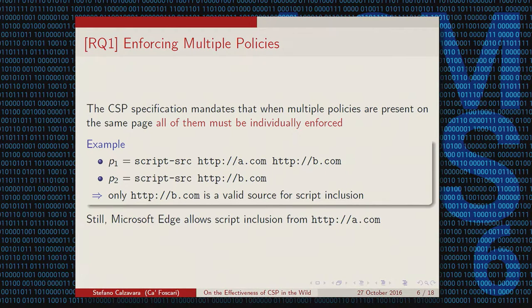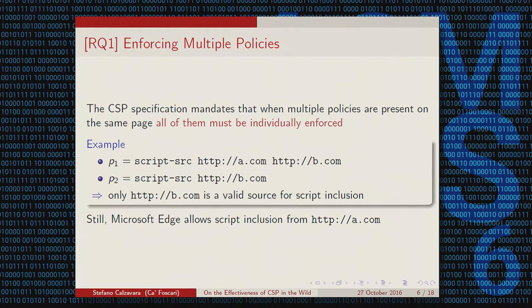Let me discuss the bug in Microsoft Edge. The CSP specification says that if there are multiple policies on the same page, all policies must be individually enforced. For example, with policy P1 allowing scripts from a.com and b.com, and policy P2 allowing only b.com, enforcing both means only b.com should be a valid source — essentially intersecting the two policies. But Microsoft Edge instead allows script inclusion from a.com also, because when directives conflict across policies, the first directive wins. This behavior is more liberal than the specification prescribes and may open room for attacks.